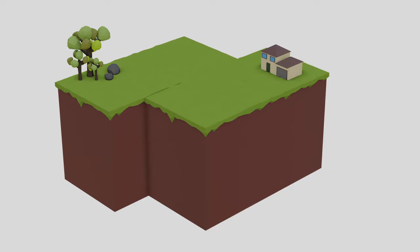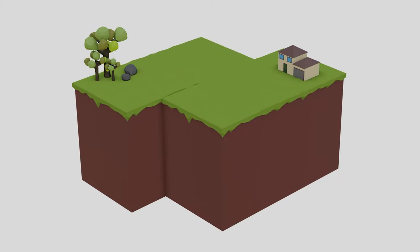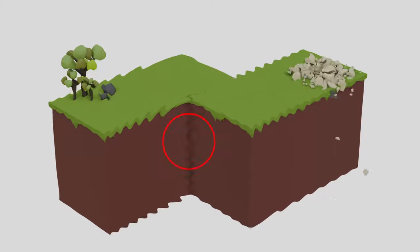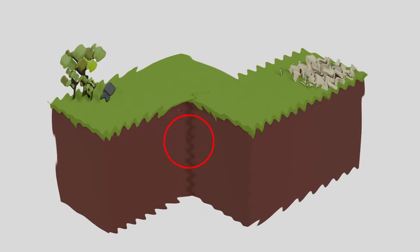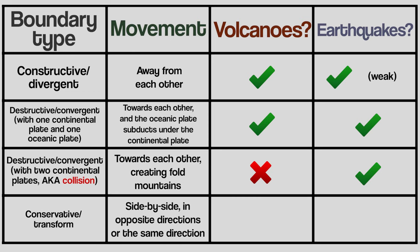The edges of the plate get stuck on each other as they grind past, and you probably know the rest by now. It builds up energy, and after a while, they jolt back into moving again, and the energy gets released, causing the ground to shake. Earthquake.